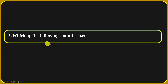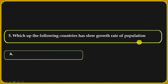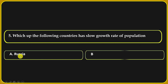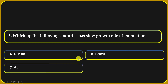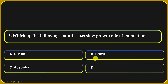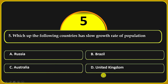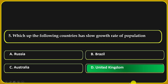Which of the following countries has a slow growth rate of population? Russia, Brazil, Australia, or United Kingdom. The correct answer is United Kingdom.